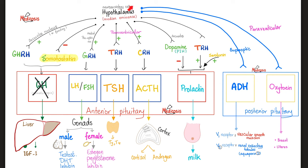TRH from the hypothalamus also stimulates release of prolactin from the anterior pituitary. Pro-lactin is pro-lactation — it produces milk from the mammary glands. If the hypothalamus does not want prolactin secreted, it makes dopamine. Dopamine inhibits the release of prolactin — so dopamine is a prolactin-inhibiting hormone or factor. Inside the anterior pituitary, red-colored acidophil cells secrete growth hormone and prolactin, while blue-colored basophil cells make gonadotropins, TSH, and ACTH.